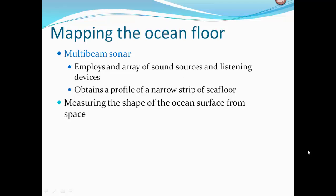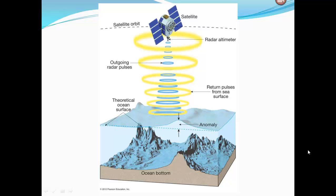We can also measure the shape of the ocean surface from space. A satellite sends out radar — a radar altimeter — with outgoing radar pulses, and we get incoming return pulses from the sea surface. This actually maps the surface of the ocean. The surface of the ocean isn't flat; it tends to replicate or mimic what's going on at the ocean floor.